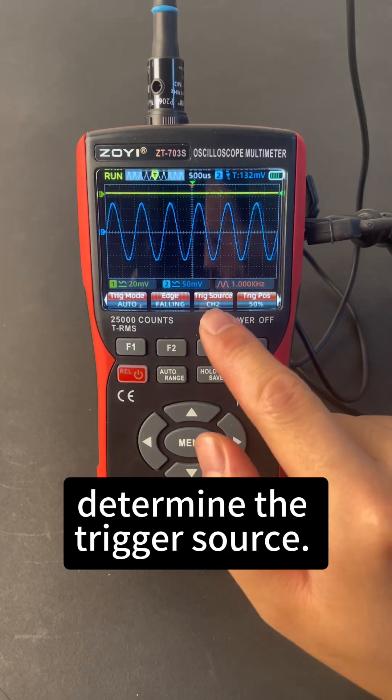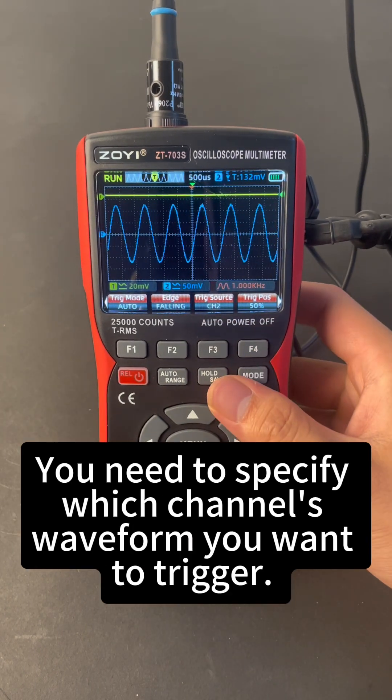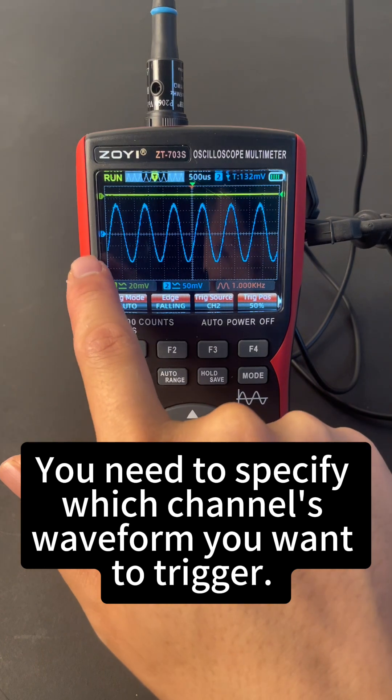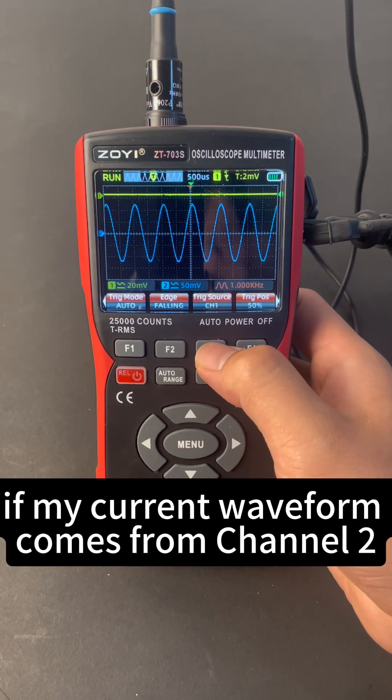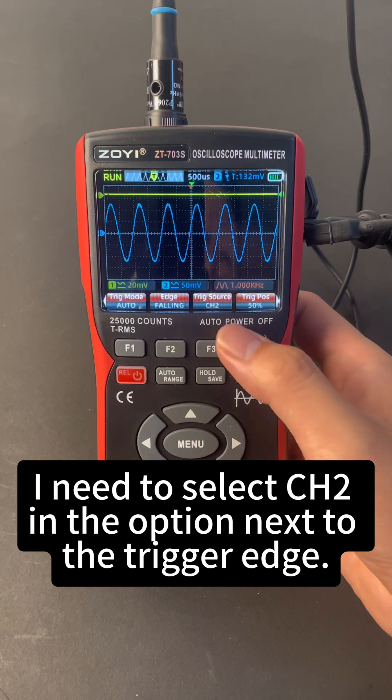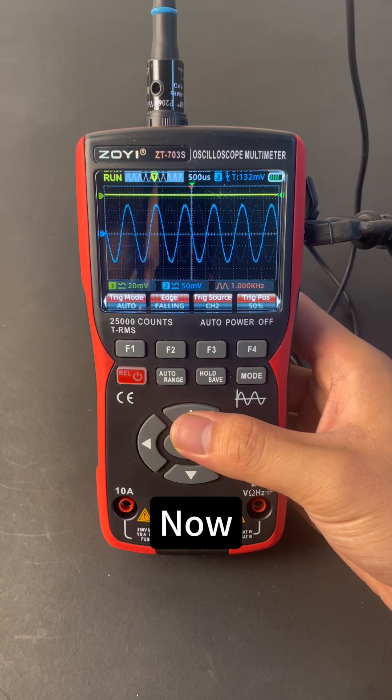Next, determine the trigger source. You need to specify which channel's waveform you want to trigger. For example, if my current waveform comes from channel 2, I need to select CH2 in the option next to the trigger edge.